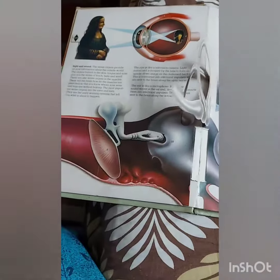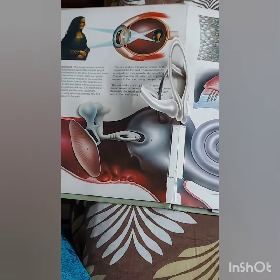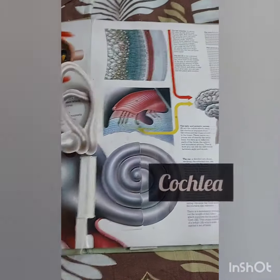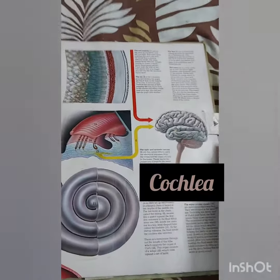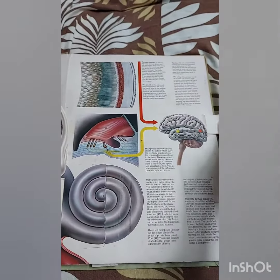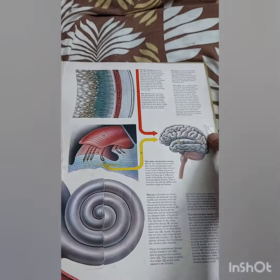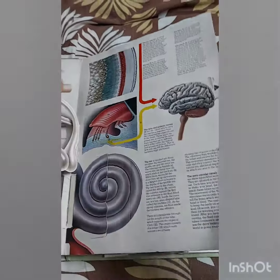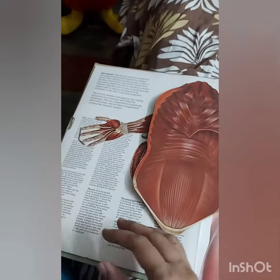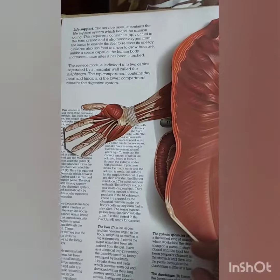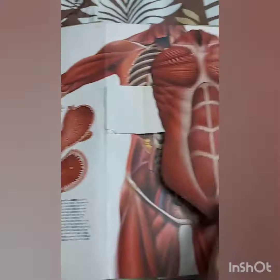Same way, inside the ears, there will be a snail-shaped organ. This is called the cochlea. With the cochlea, whatever we hear will be converted into electrical impulses and are sent to the brain along the acoustic nerve.